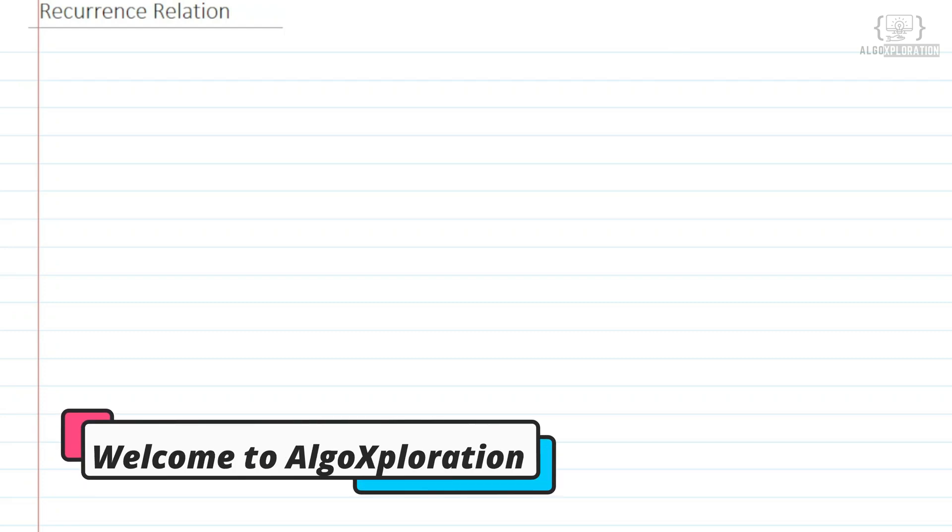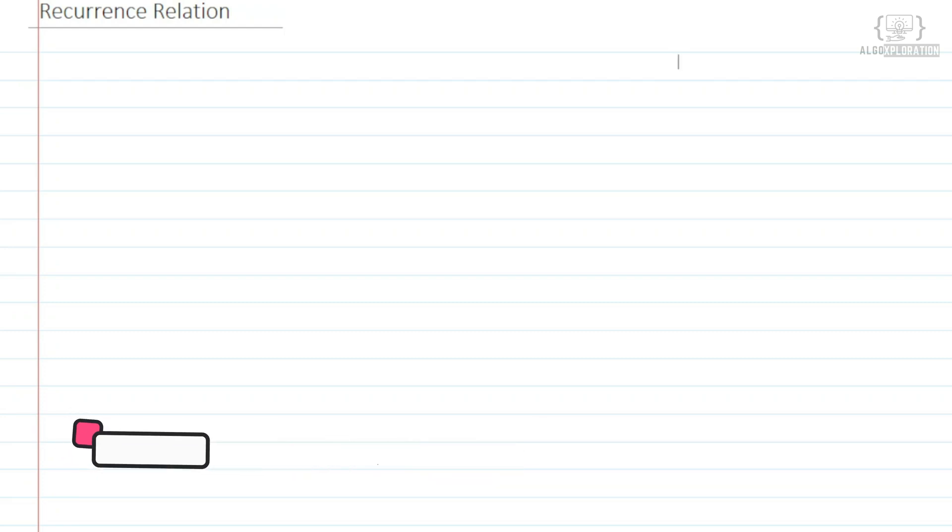Hi and hello. Welcome to our channel named Elbexperation. My name is Samir and today we are going to learn recurrence relation. Basically, recurrence relation is found from the recursive code to find the time complexity of a code.